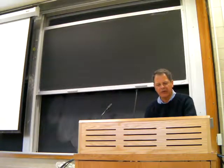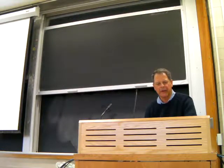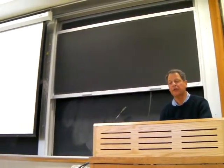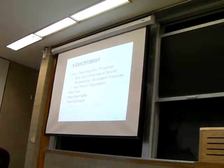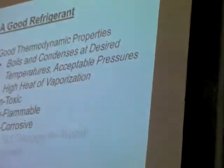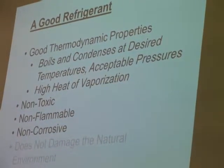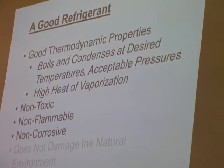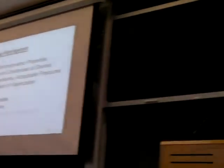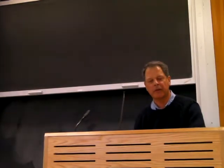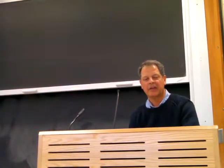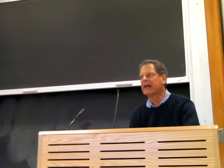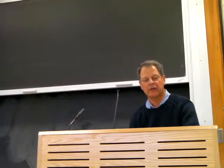I hope you can see the components as you go through here. The fluid — the magic fluid that goes through this cycle, the refrigerant — what makes a good refrigerant? It must have good thermodynamic properties. It must boil and condense at the desired temperatures and acceptable pressures, and it must have a high heat of vaporization — the kilojoules of heat that will vaporize one kilogram of refrigerant, or given off by one kilogram as it condenses. There are other desirable properties: it should be non-toxic, non-flammable, and non-corrosive. And it should not damage the natural environment.